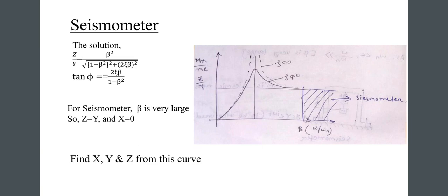For a seismometer, beta is very large, so z equals y and the instrument displacement x approaches zero, meaning z directly measures y. We can find x, y, and z from the response curve.